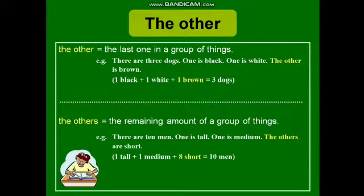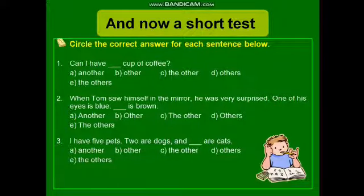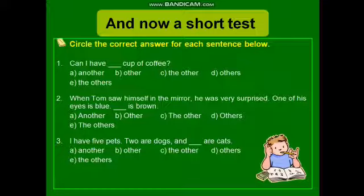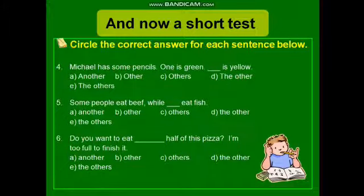I hope you understand. Let's practice with a short test. Look at the first one: can I have...? The options are another, other, the other, others, and the others. I'll choose another, because you want one more here — can I have another cup of coffee? You need to be very attentive and circle the correct answer for each sentence below. We have a few more on this page.